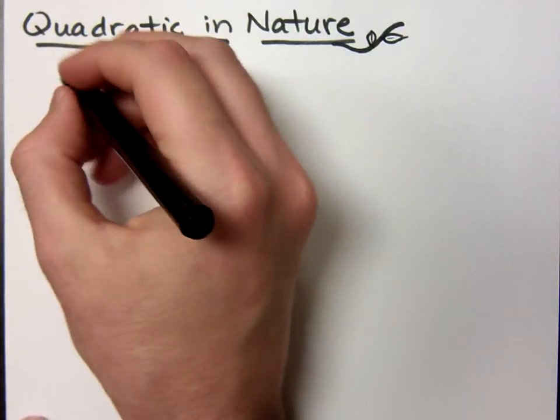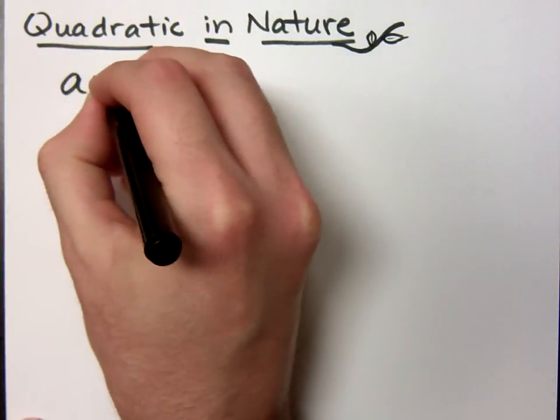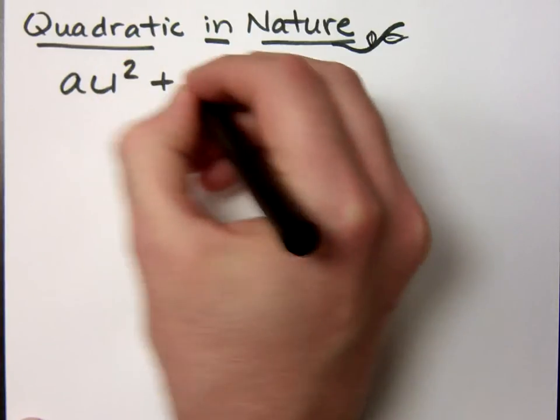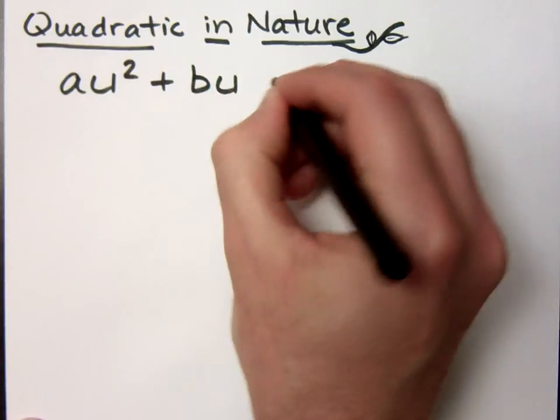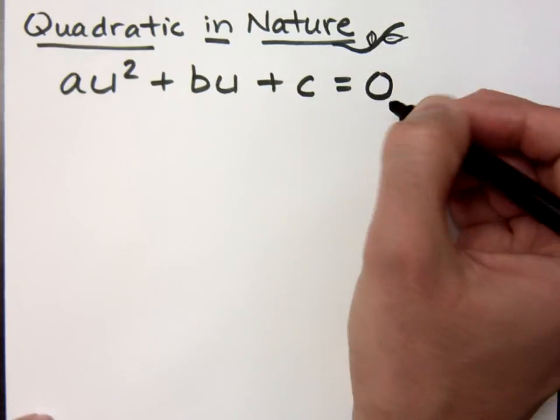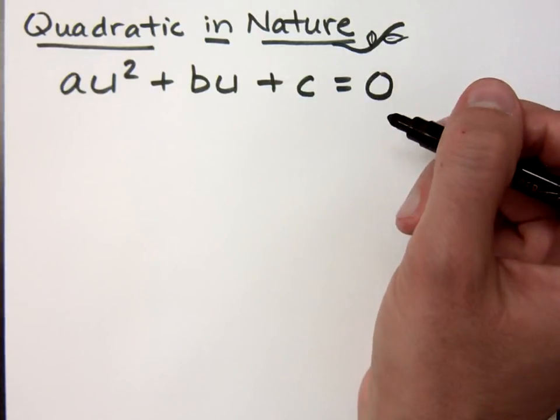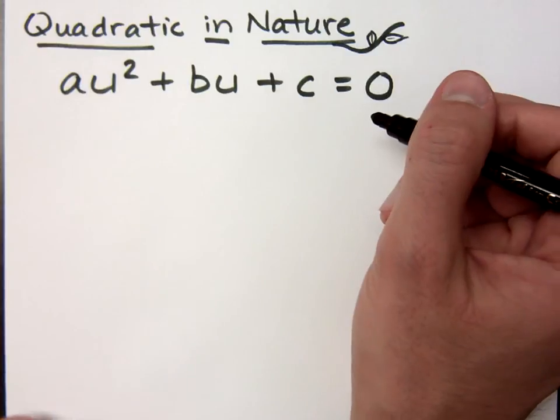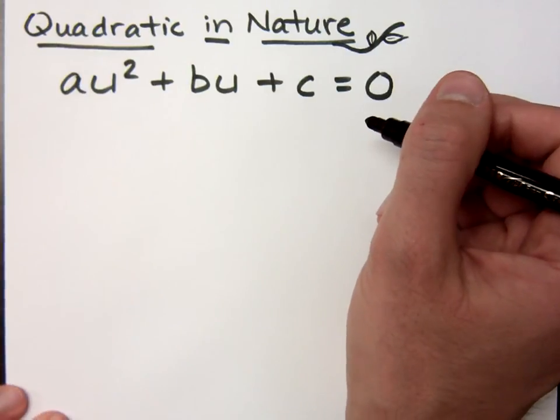Equations that are quadratic in nature will take on this form: au² + bu + c = 0. These are guys that are not necessarily quadratic, but they have a nature, they have a form that makes them look quadratic.